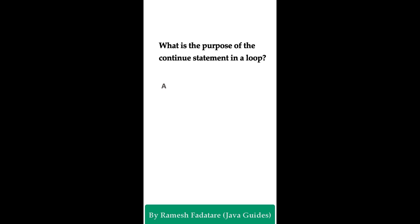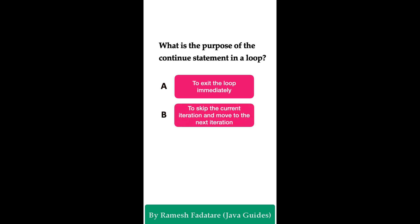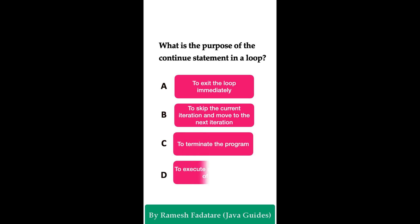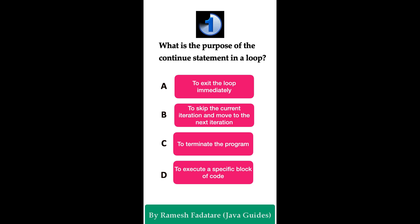Welcome to Java Quiz Series. What is the purpose of the continue statement in a loop? Option A: to exit the loop immediately, Option B: to skip the current iteration and move to the next, Option C: to terminate the program, Option D: to exit a specific block of code. You have five seconds to answer. The correct answer is Option B: to skip the current iteration and move to the next iteration.